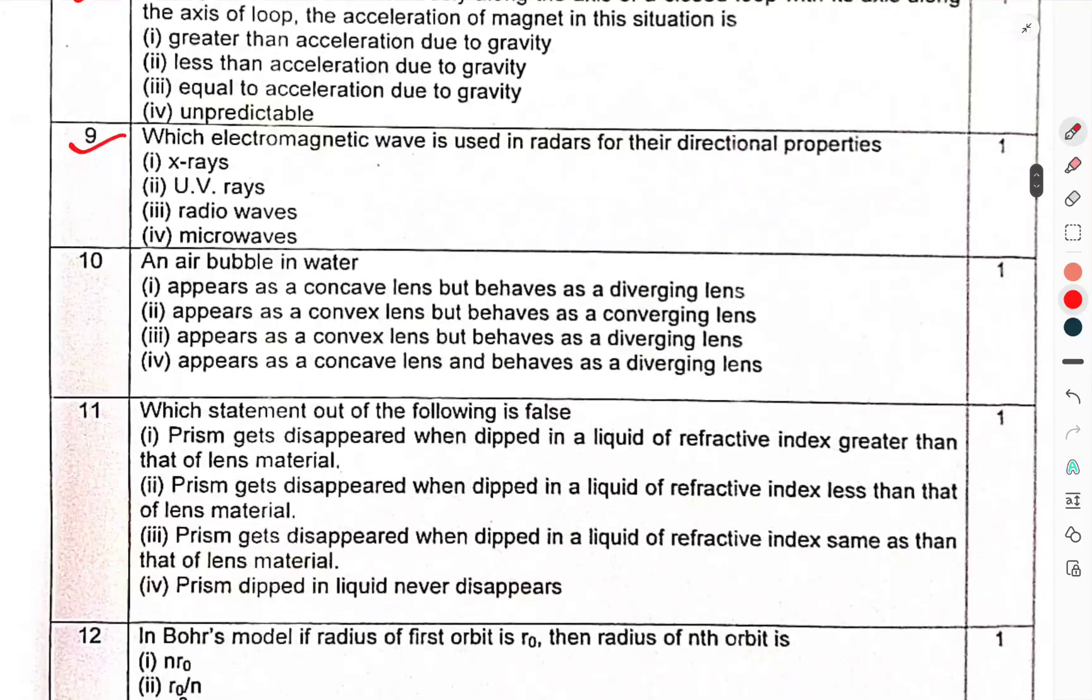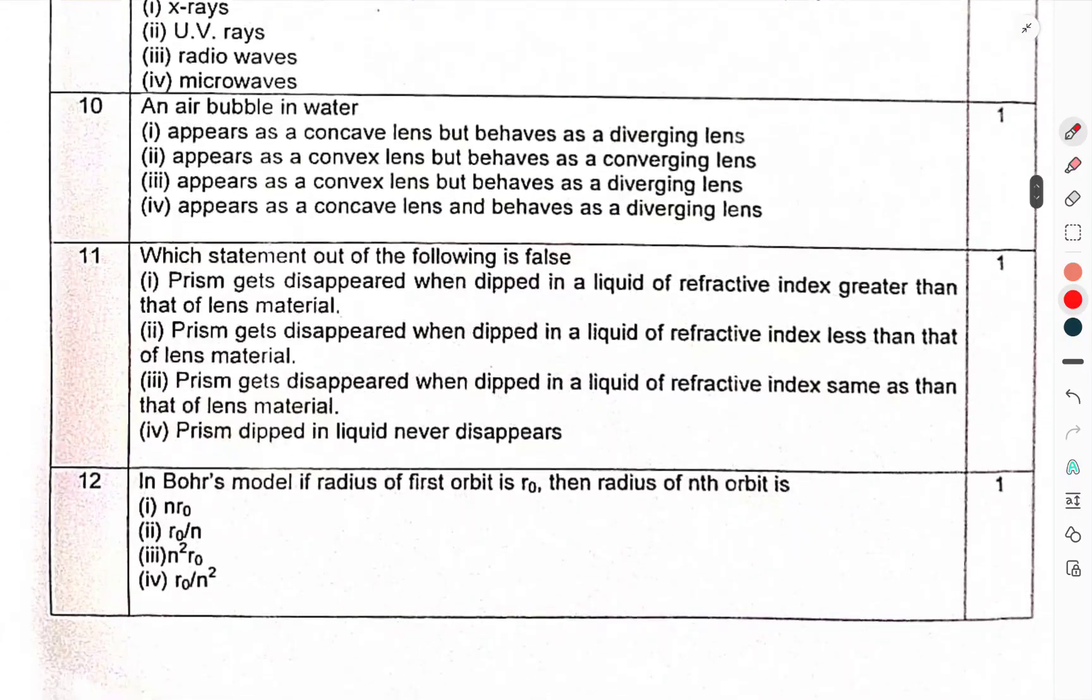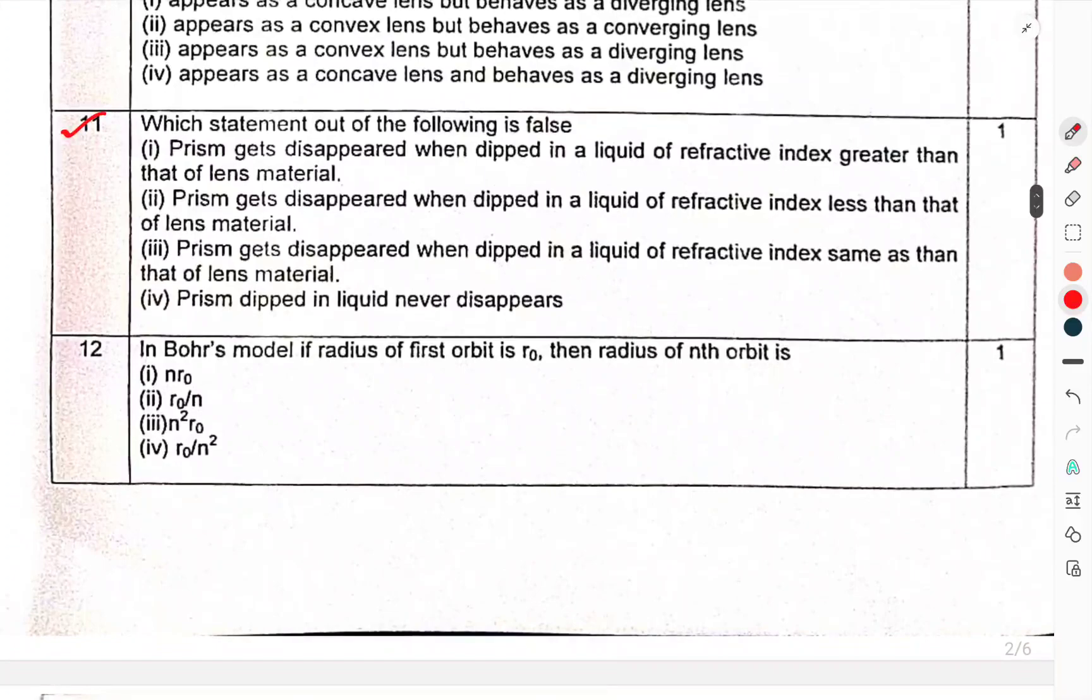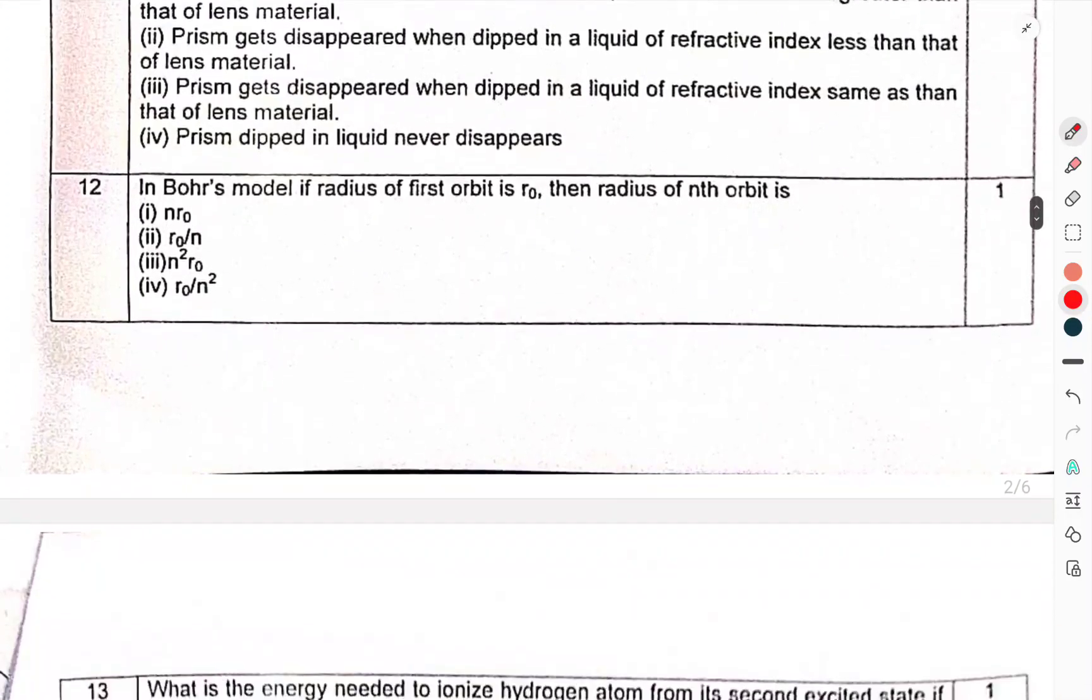Question 9: Which electromagnetic wave is used in radars for their directional properties? Question 10: An air bubble in water? Question 11: Which statement out of the following is false? Question 12: In Bohr model, if the radius of first orbit is R0, then the radius of nth orbit is?